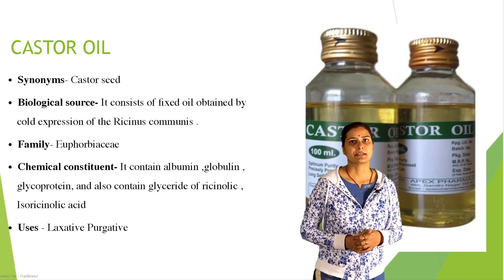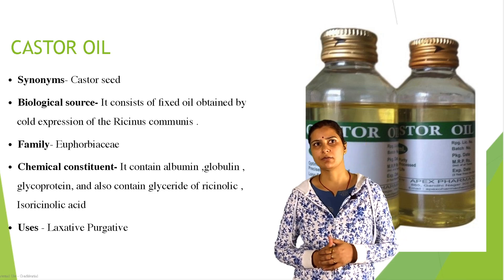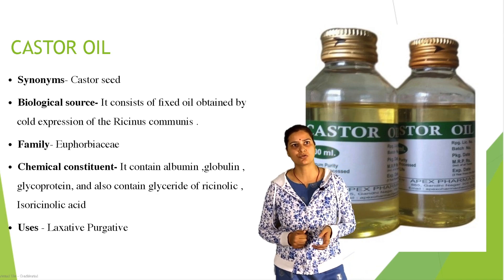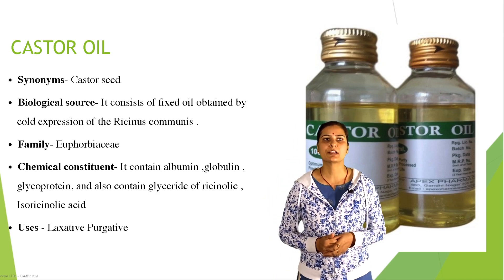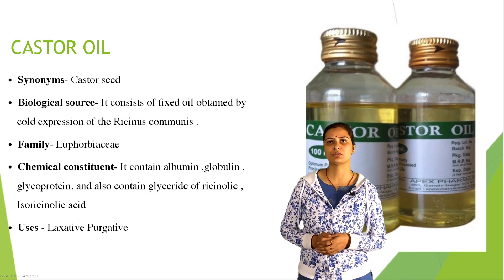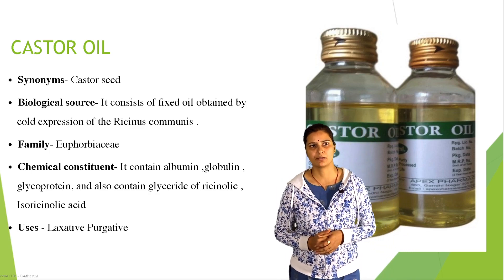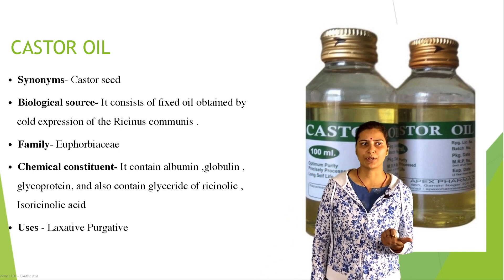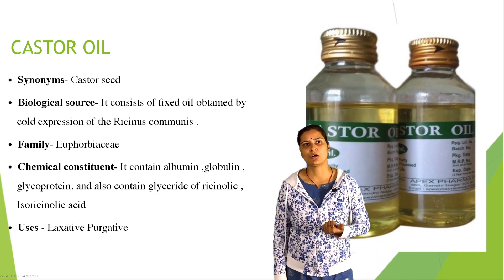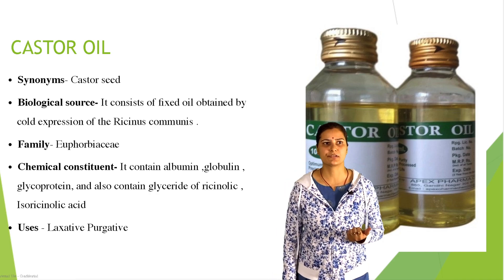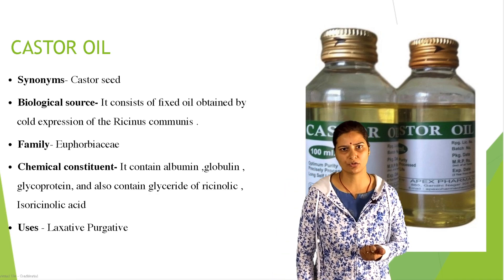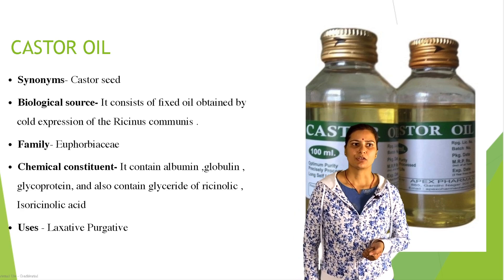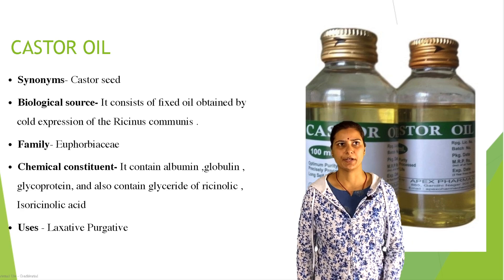Fifth drug: castor oil. Synonym: castor seed. Biological source — it consists of fixed oil obtained by cold expression of Ricinus communis, belonging to the family Euphorbiaceae. Chemical constituents: albumin, globulin, glycoprotein, and glycerides of ricinoleic acid and isoricinoleic acid. Main active constituents are ricinoleic and isoricinoleic acid. Uses: laxative and purgative.